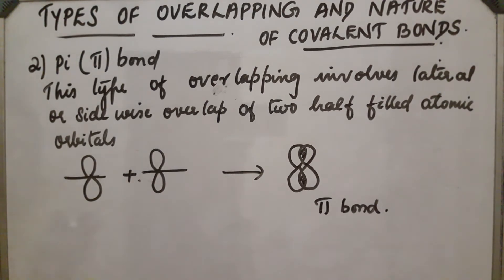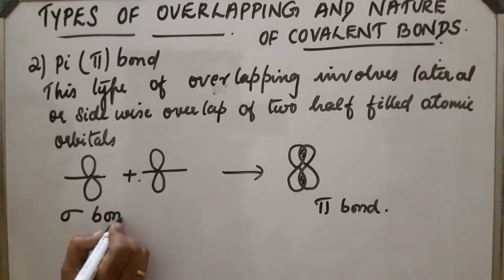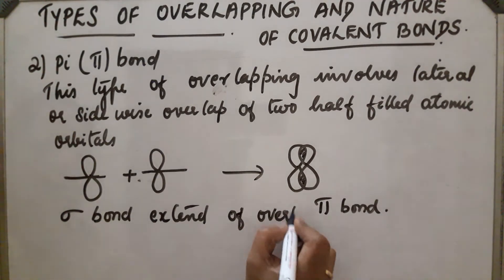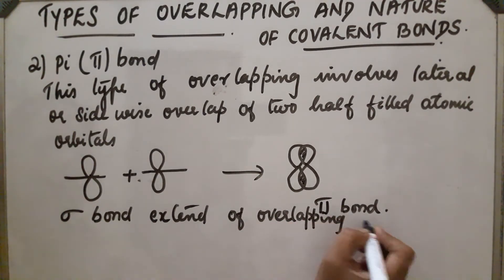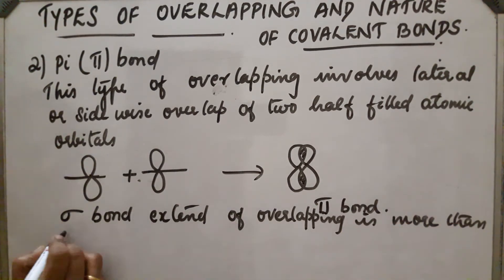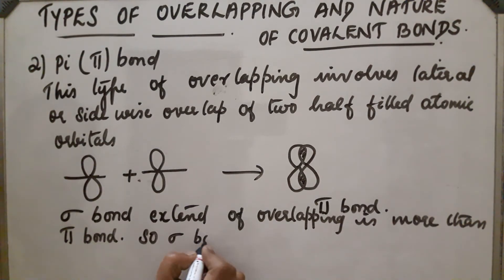In a pi bond, the two P orbitals are perpendicular to the plane of the inter-nuclear axis. Comparing pi bond and sigma bond, the strength of a bond depends upon the extent of overlapping. In the case of sigma bond, the extent of overlapping is more than in the pi bond, meaning sigma bond is stronger than pi bond.